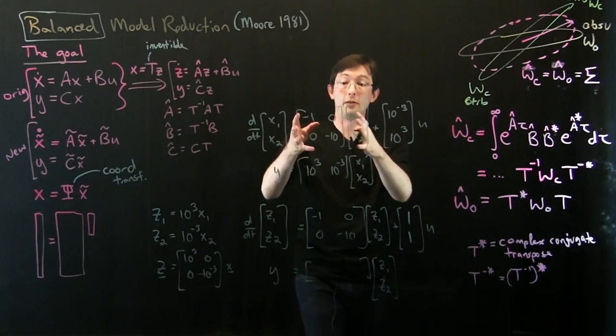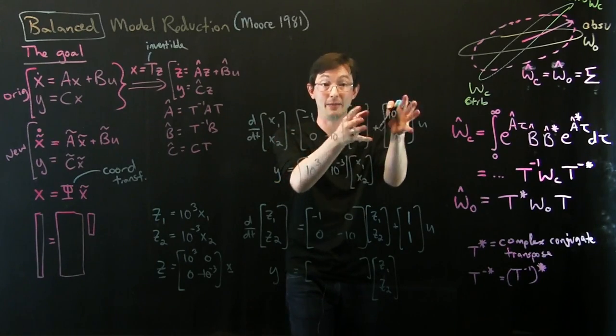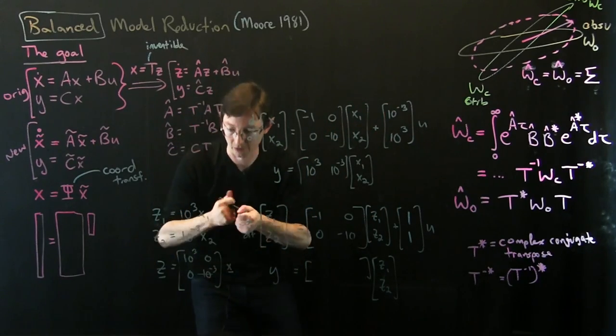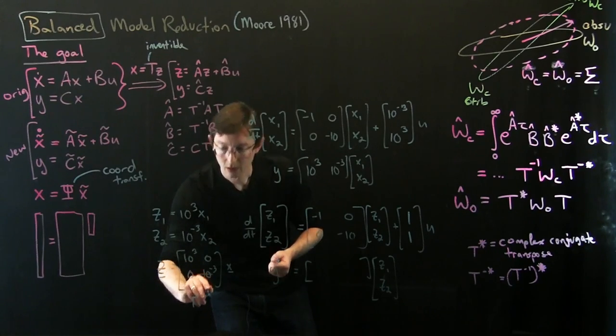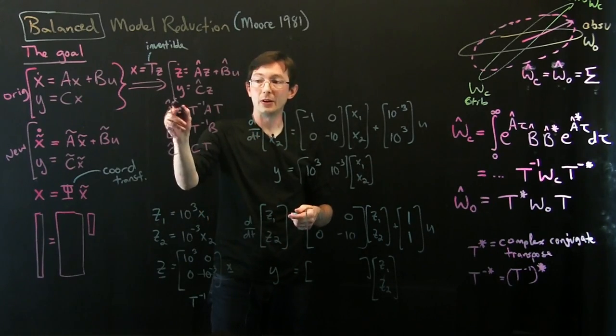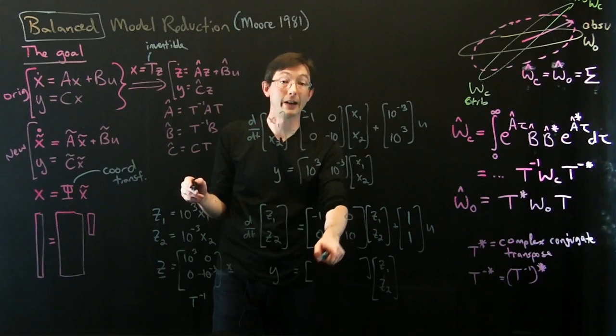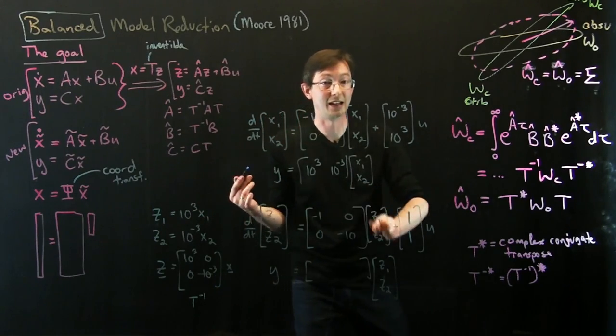And I want you to actually go through... I'm going fast. I want you at home to go through and take these ABC matrices, and this is T inverse, and compute T, and then compute A-hat, B-hat, and C-hat, and verify that what I'm doing here is correct. I'm just kind of taking this for granted.